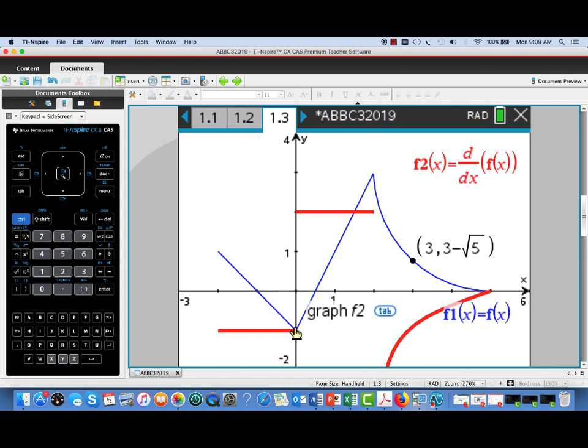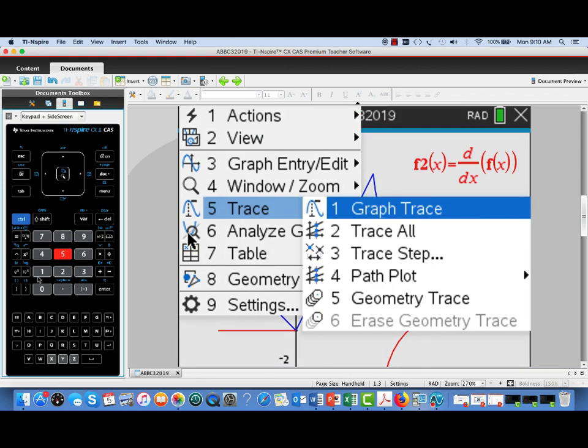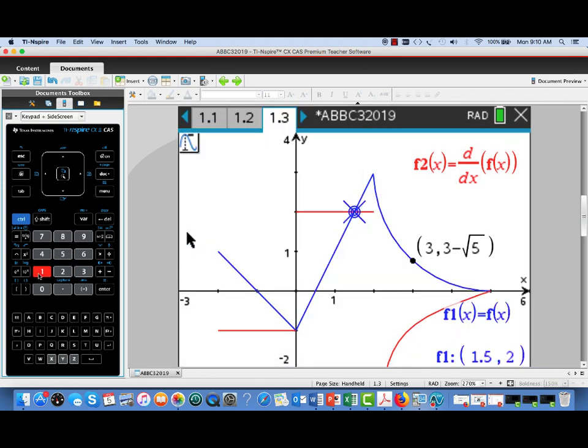Now here's a couple of kind of distinguished points on the graph of f1, our original function. There's a sharp corner at 0 and another sharp change in direction at 2. Let's turn on the trace. And right now I'm tracing our original function, which was f1.